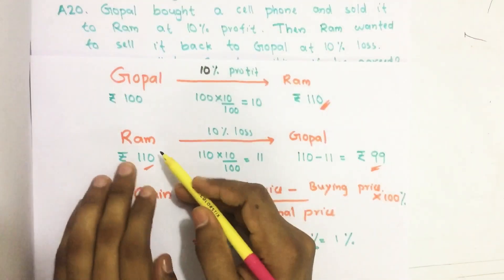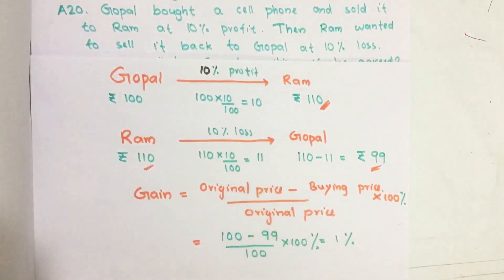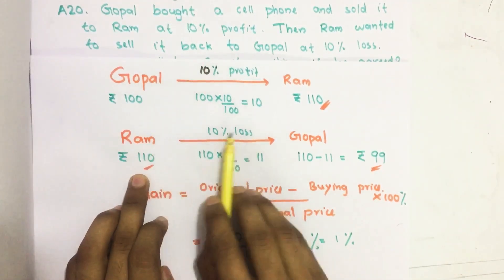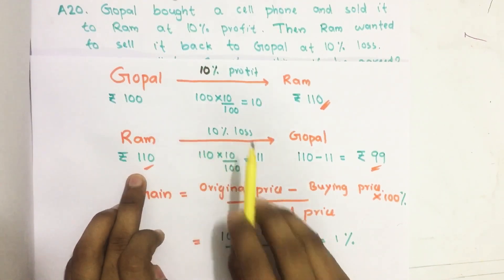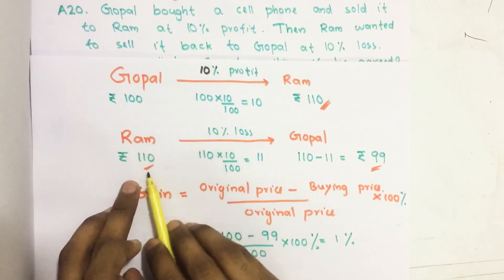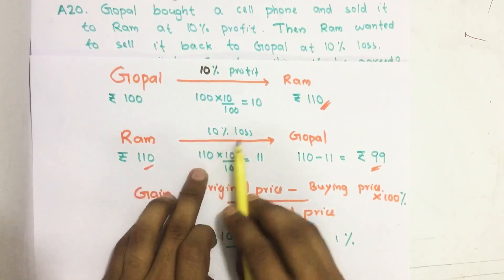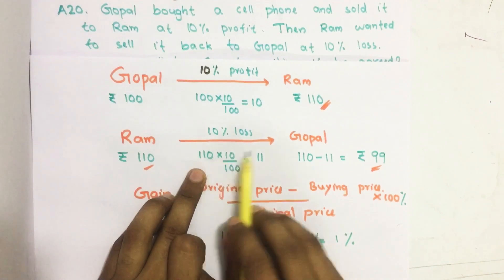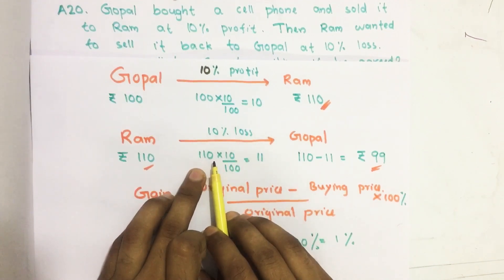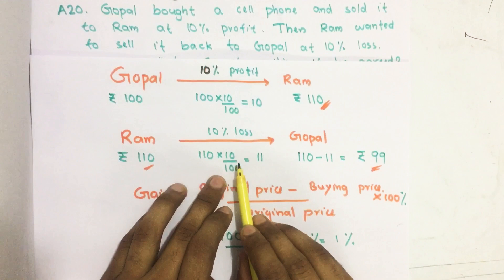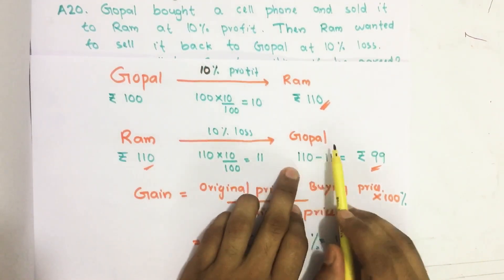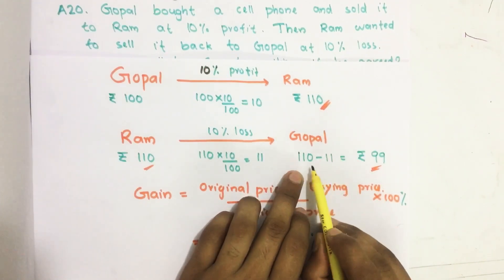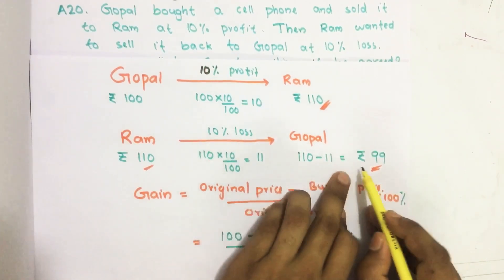Then Ram wanted to sell it back to Gawbal at 10% loss. Ram is giving 10% loss on his price of Rs. 110. So 10% loss of 110 equals 110 into 10 by 100, which is Rs. 11. Then Gawbal's buying price becomes 110 minus 11, which is Rs. 99.